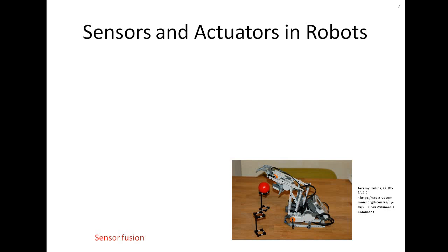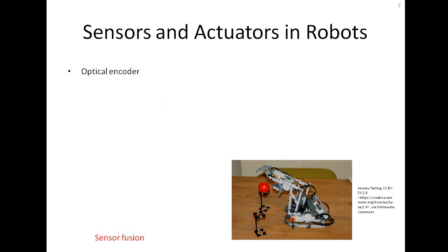Now let's see some commonly used sensors and actuators. The first is the optical encoder, used for position measurement. They are normally attached to joints or wheels to measure the number of turns or the position of a joint — for example, measuring the angle of a link in the robot.